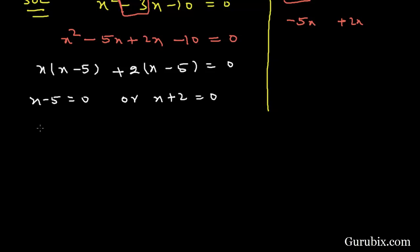This means x = 5 or x = -2. So these are the two roots of the given quadratic equation. This is the solution of the question. Thank you.